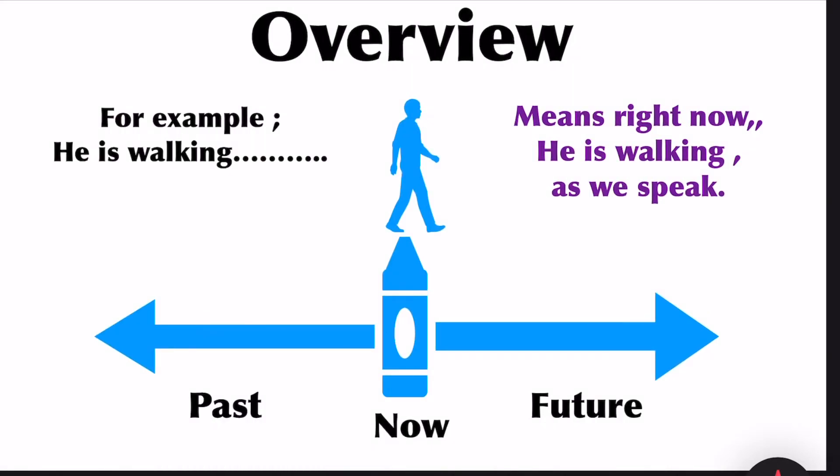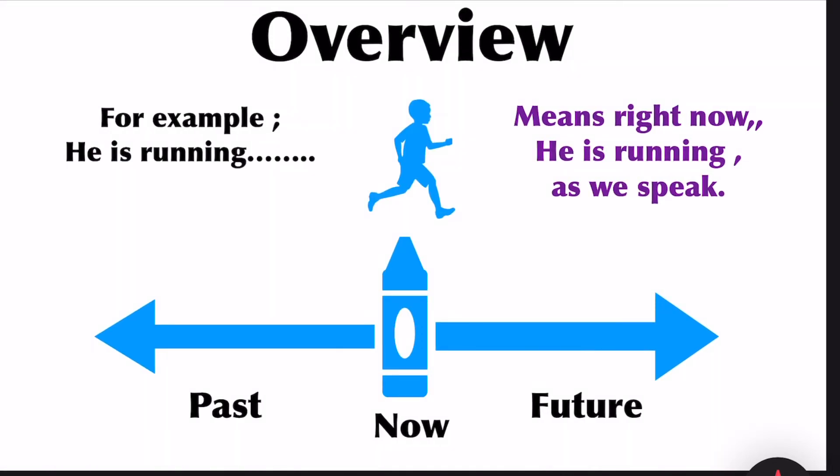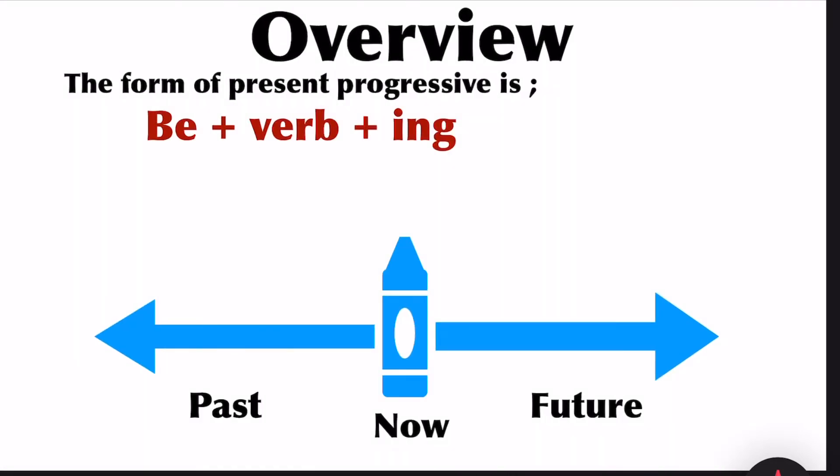Look at the example here: he is walking now. He is walking means right now he is walking as we speak. Next example: he is running means right now he is running as we speak, at the moment of speaking. Look at the verb form of present progressive tense: be plus verb plus ing.